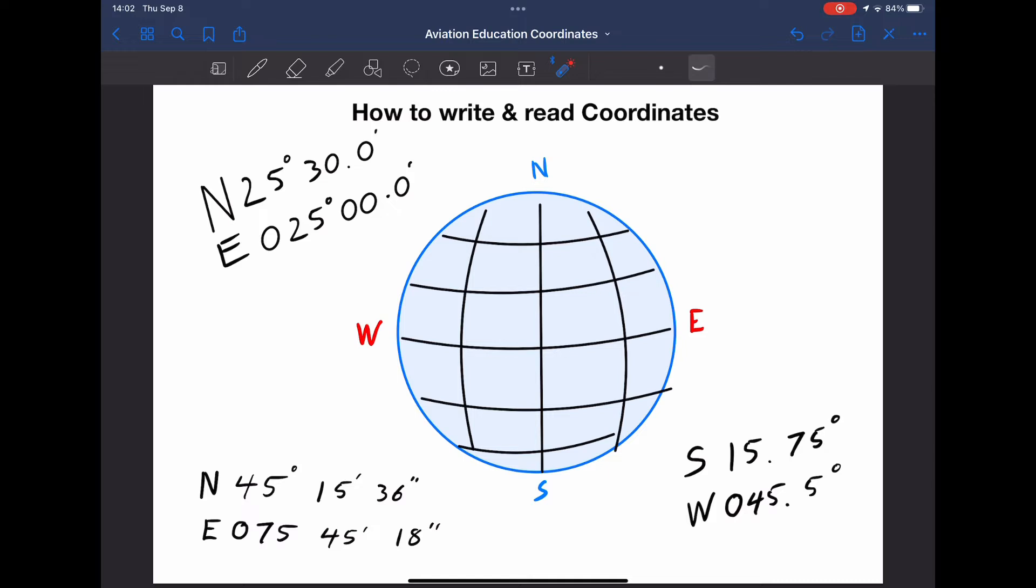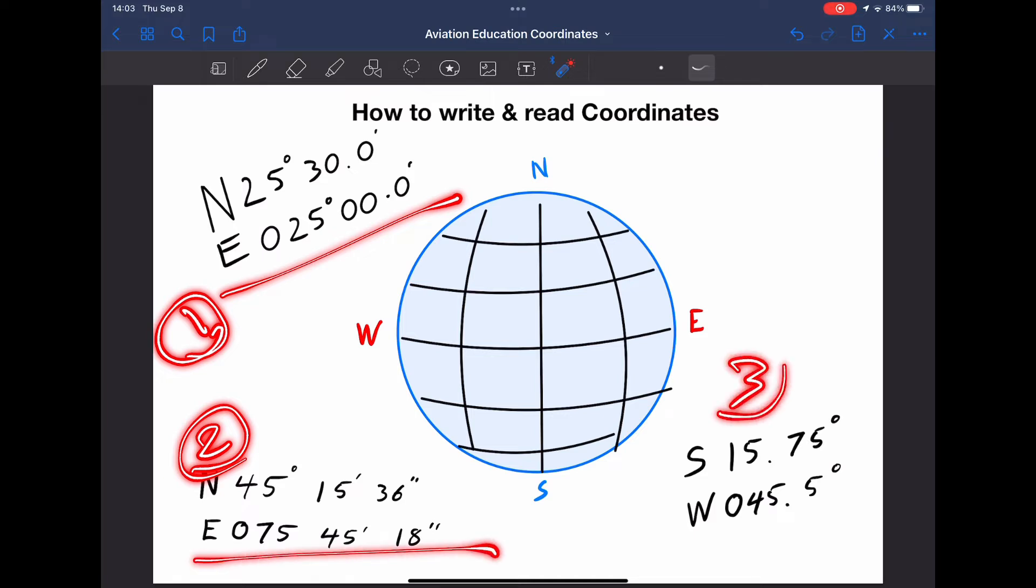I have three coordinates. One in the top left, two in the bottom left, and three in the bottom right. There is something different about these three coordinates, and I'm not talking about the numbers. If you take a look at the right end of the numbers, the formatting is different. Let's look at coordinate number two. It reads 45 north, 15 minutes, and 36 seconds.